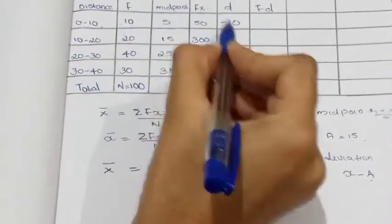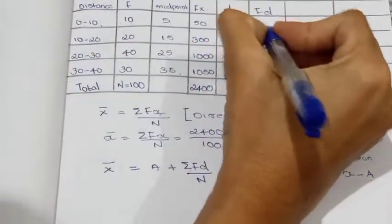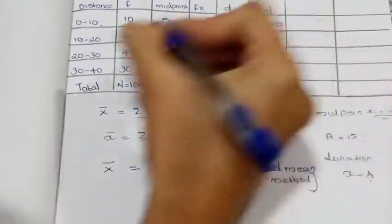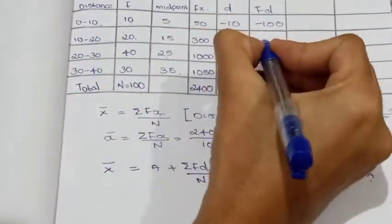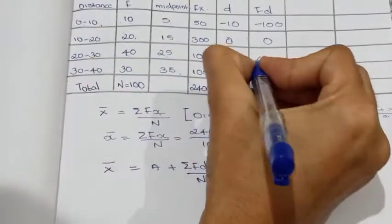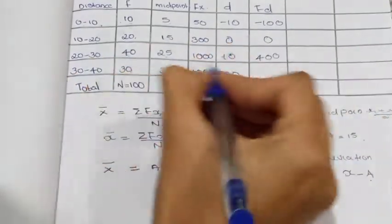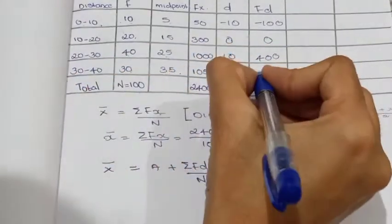The fd values are: 10 into minus 10 equals minus 100; 20 into 0 equals 0; 40 into 10 equals 400; 30 into 20 equals 600.